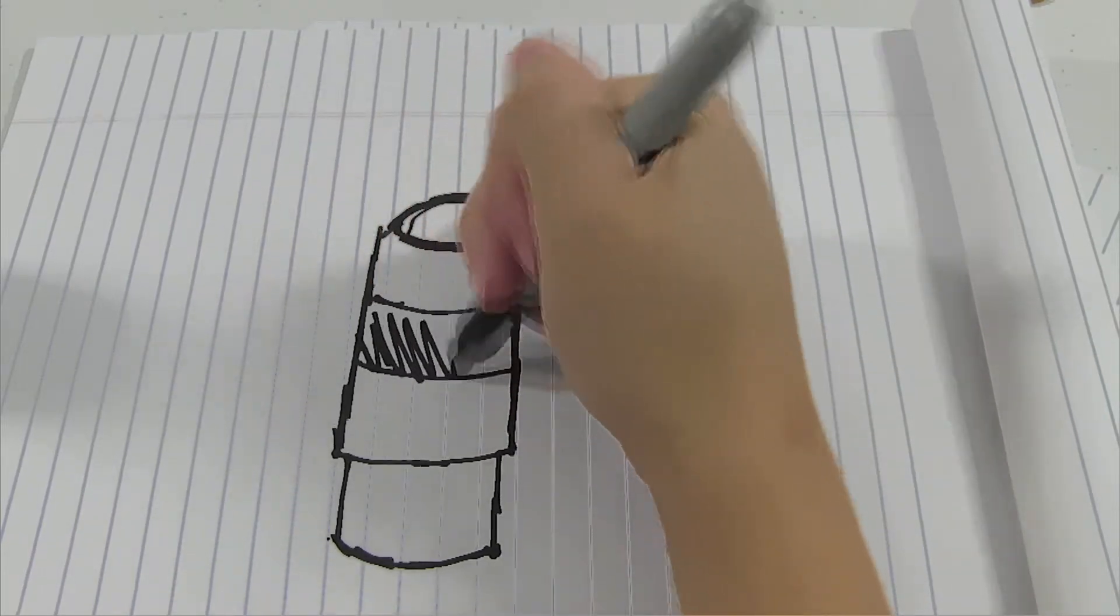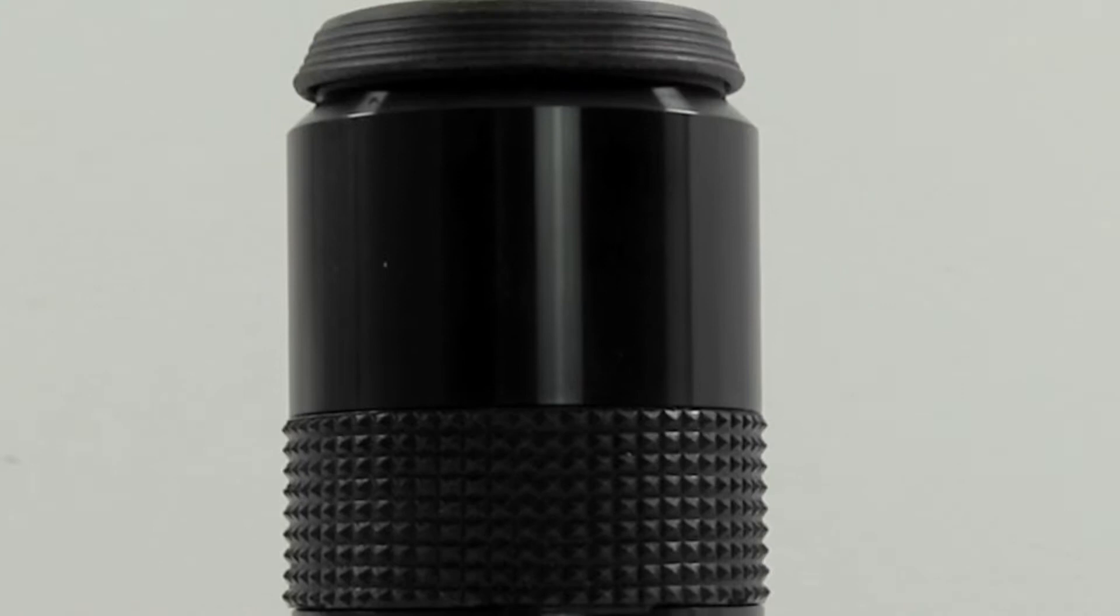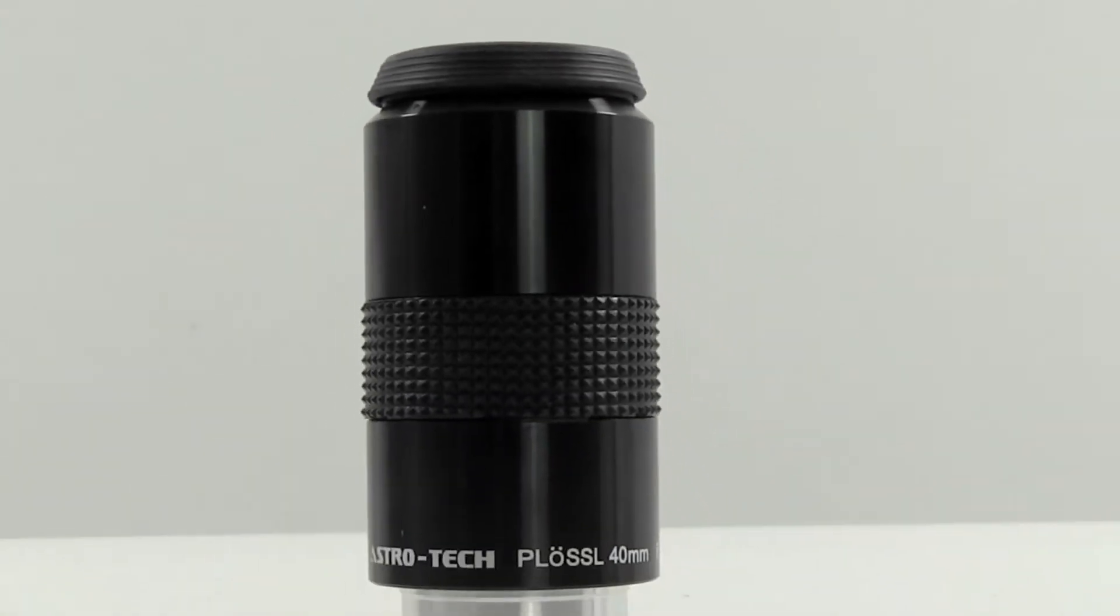It has a fully CNC machined body, a nice rubber-knurled ring, one for cold weather so you can grip it and get it out, and a rubber rolled-down eye cup.